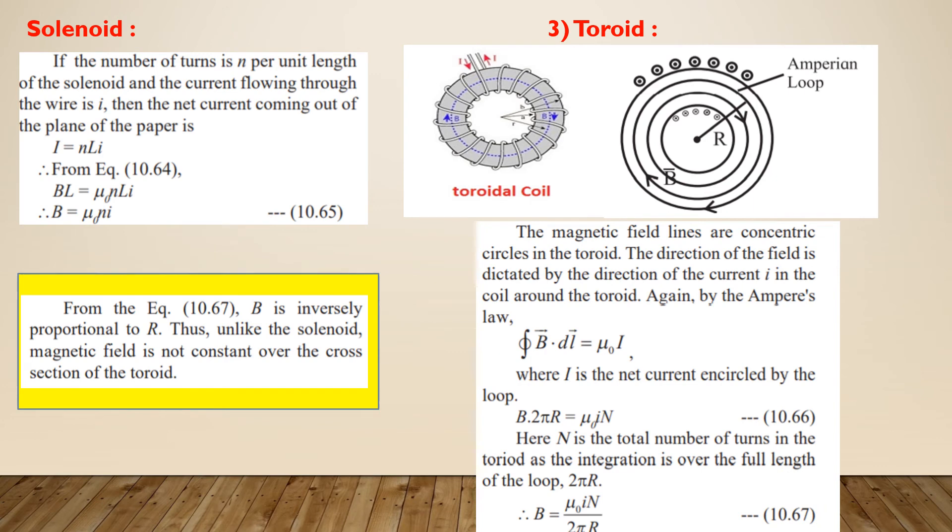In the previous slide, we have obtained the equation B into capital L is equal to mu0 into capital I where big I is the net current through the loop. Now, if the number of turns per unit length of the solenoid is small n and the current flowing through the wire is small i, then the net current coming out of the plane of the paper is big I is equal to n L into small i.